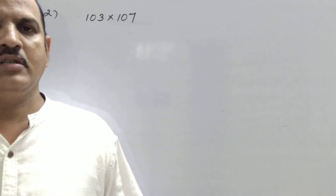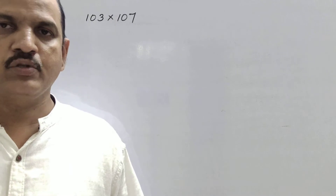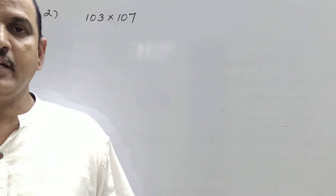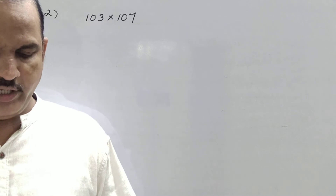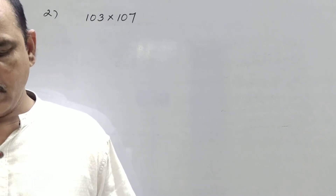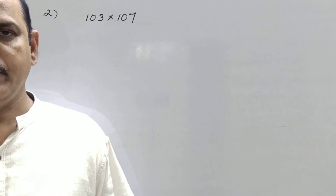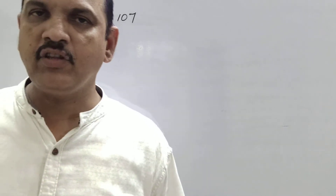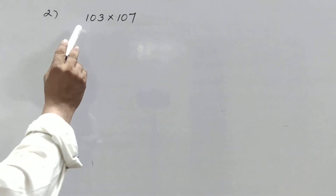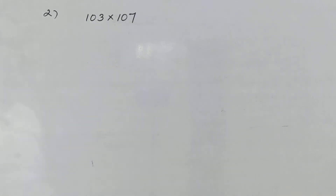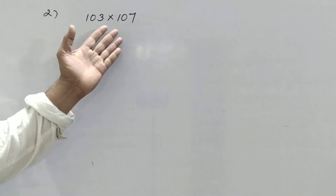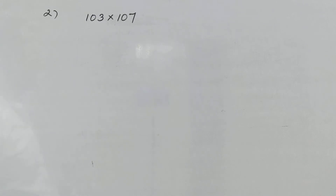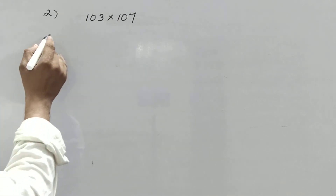If you don't know the formulas, you cannot move an inch. See the second question: evaluate the following products without multiplying directly. He gave the first question here — 103 into 107. You know how to multiply 103 into 107 very easily, but he is asking without actual multiplication. That means you have to use some identity here.